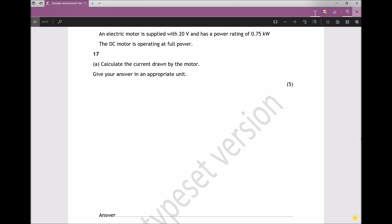So first of all, we know the voltage is 20 volts and the power is 0.75 kilowatts. Now it's important to note that to get from kilowatts to watts we need to times by a thousand. Therefore, 0.75 kilowatts is the same as 750 watts.